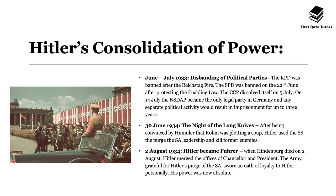On 2nd August 1934, Hitler became Führer. When Hindenburg, who was the president, died on 2nd August, Hitler merged the offices of chancellor and president. The army, grateful for Hitler's purge of the SA, swore an oath of loyalty to Hitler personally. His power was now absolute.